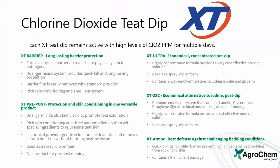The XT line of t-tips are extended-time t-tips designed to last longer once mixed. They are available in a barrier, a pre-post, and concentrates in XT Ultra and XT22C. Concentrates can be diluted down to a 1-to-56 ratio, making them very effective and economical alternatives to iodines. The XT Barrier and XT Armor are two different barrier versions — one with a quicker drying film — giving farms multiple options.